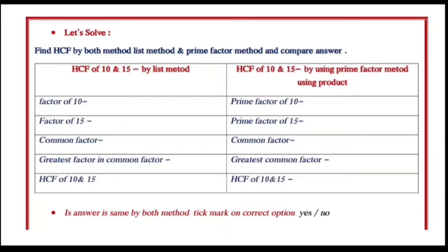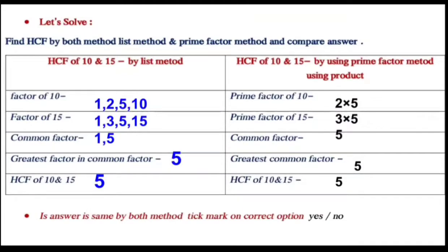And here the question is: is answer the same by both method? Tick mark on correct option. Now let's see HCF of 10 and 15 by list method. Factor of 10 is 1, 2, 5 and 10.